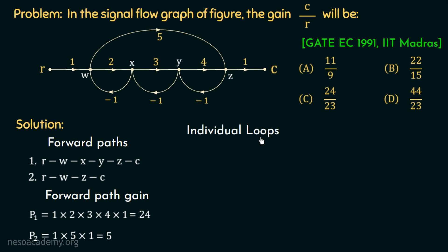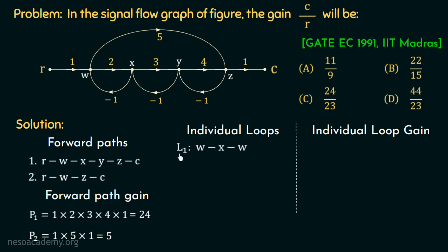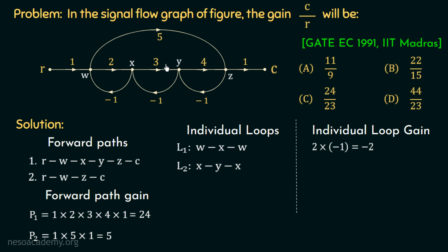We will now move on to identifying individual loops and calculating their gains. The first individual loop L1 is W, X, W — starting from node W, moving to node X via a branch and back to W. The gain of L1 is 2 × (−1) = −2. The second loop L2 is X, Y, X — starting from node X, moving to node Y and back. The loop gain of L2 is 3 × (−1) = −3.